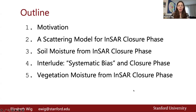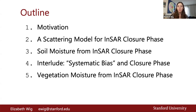For an outline of my talk today, I'll be discussing why soil and vegetation moisture are important for a couple of applications. I'll discuss how we can use a basic scattering model to infer the behavior of closure phase. Then I'll show how analysis with this model can enable us to estimate soil moisture from INSAR closure phase with some real data over the state of Oklahoma. I'll briefly touch on the systematic bias that results in short baseline interferograms seeing what looks like a bias in deformation. And finally, I'll discuss some preliminary results on measuring vegetation moisture from INSAR closure phase and on measuring vegetation and soil moisture at the same time.